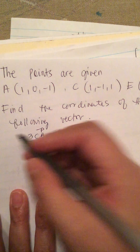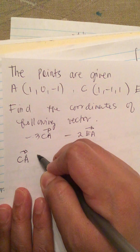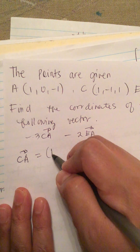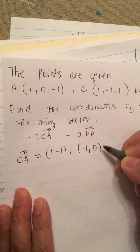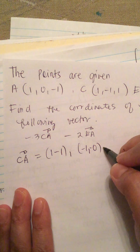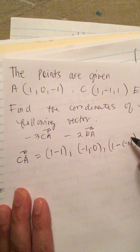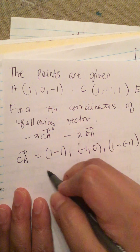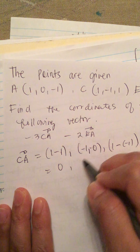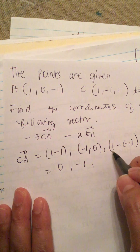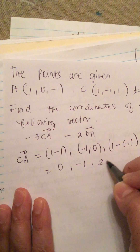So, vector CA equals (1 minus 1, minus 1 minus 0, 1 minus 0), so (1 minus 1) is 0, (minus 1 minus 0) is negative 1, and (1 plus 1) is 2. So vector CA equals (0, -1, 2).